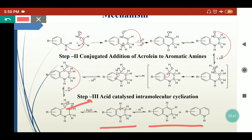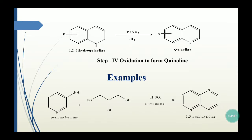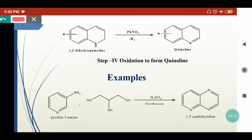Since this is a dihydroquinoline, to generate quinoline we need to remove one mole of hydrogen to restore aromaticity in the nitrogen-containing ring. Nitrobenzene acts as the oxidizing agent and removes the two hydrogen atoms to generate quinoline from the dihydroquinoline. This is a 1,2-dihydroquinoline; when nitrobenzene is treated on this molecule it releases hydrogen and generates quinoline.